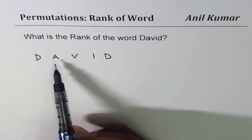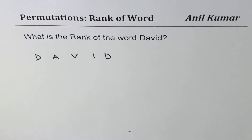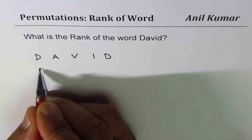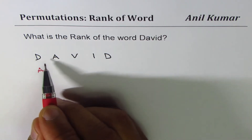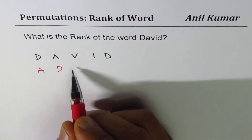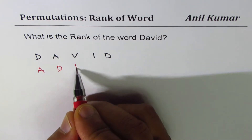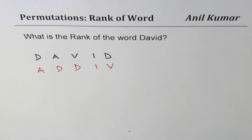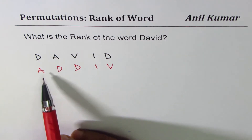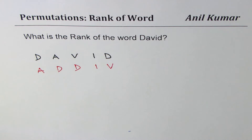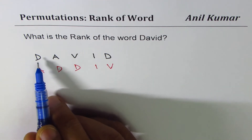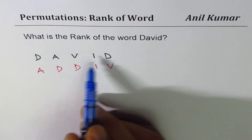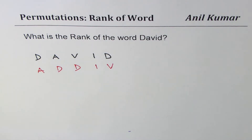What is going to be my first word which can be formed with DAVID? Alphabetically, A comes first, so the first word will start with A, then D — A B C D — then two D's, then I, then V. This is my very first word. All the words starting with A will come before DAVID. Let's begin the process of counting using permutation, and remember: when we have repetition, we divide by the factorial of the number of letters being repeated.